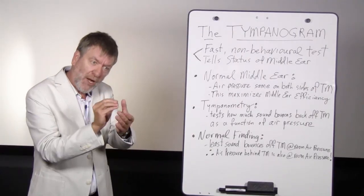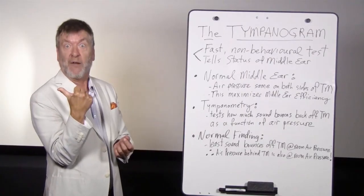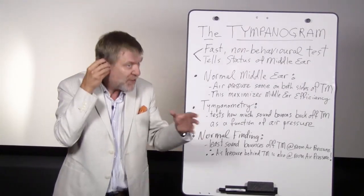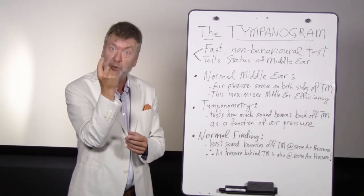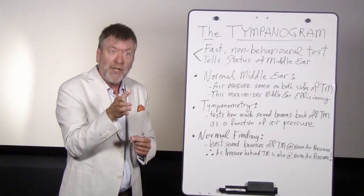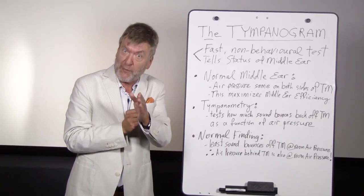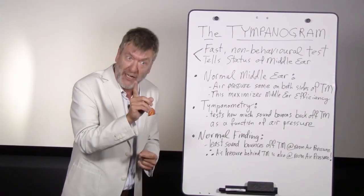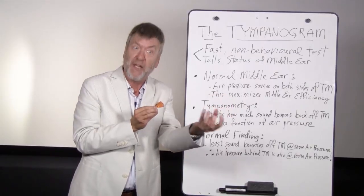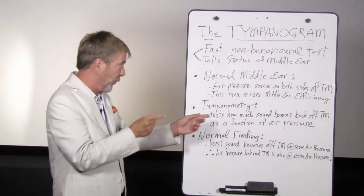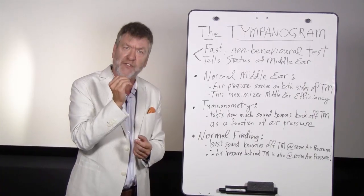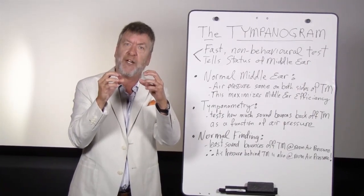A normal finding with tympanometry is that the least amount of sound is bouncing back off the drum at normal room air pressure in a closed and sealed ear canal. When most sound is going through the drum, least is bouncing back. When the least amount of sound bounces back at normal room air pressure, you realize that the air pressure on the medial side of the eardrum is also room air pressure — and that's a normal finding.